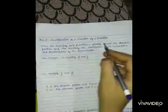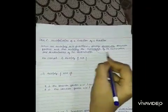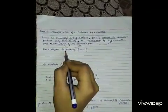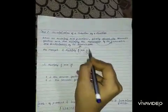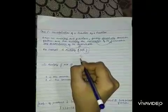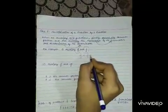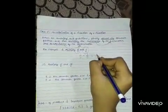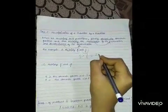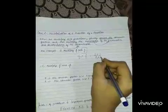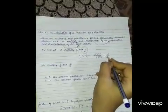2 multiply 3 upon 5. There is no common factor between them. So multiply directly: 2 multiply 3 upon 7 multiply 5 is equal to 6 upon 35.